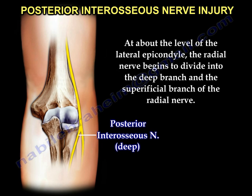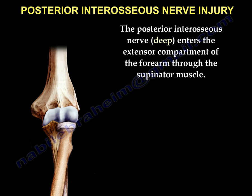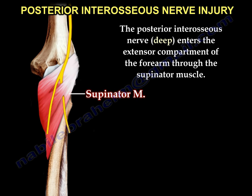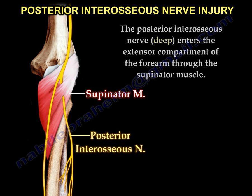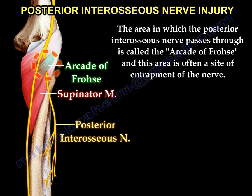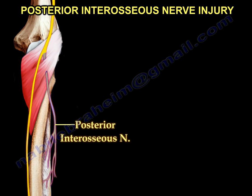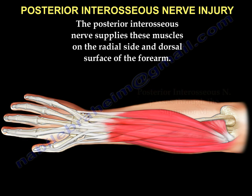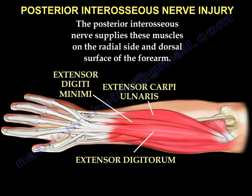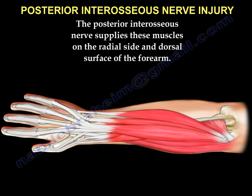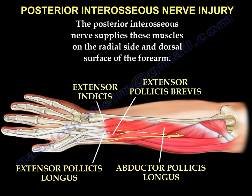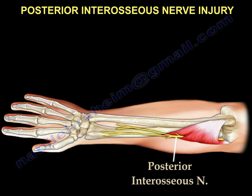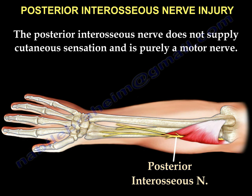At about the level of the lateral epicondyle, the radial nerve begins to divide into the deep branch and the superficial branch of the radial nerve. The posterior interosseous nerve enters the extensor compartment of the forearm through the supinator muscle. The area in which the posterior interosseous nerve passes through is called the arcade of Frohse, and this area is often a site of entrapment of the nerve. The posterior interosseous nerve supplies the muscles on the radial side and dorsal surface of the forearm.